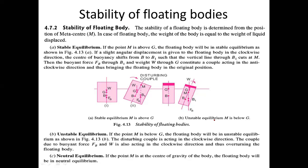This was the last topic of unit one. Let me summarize all of unit one. We started with the introduction to fluid mechanics — what it means, how it differs from mechanics, and its application areas. Then we discussed properties of fluids — extensive and intensive properties — and solved numericals on mass density, weight density, specific volume, specific gravity, surface tension, capillarity, vapor pressure, and cavitation.